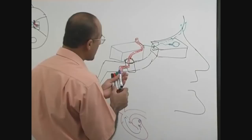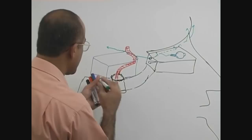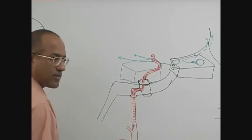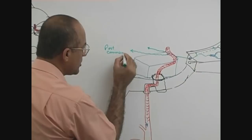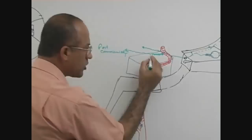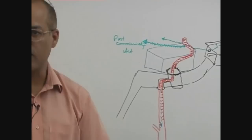Another important branch from the internal carotid artery goes backward. There are actually two branches going backward, both very important. One is the posterior communicating artery, which communicates between the carotid and the vertebrobasilar system. We will discuss it in detail later.